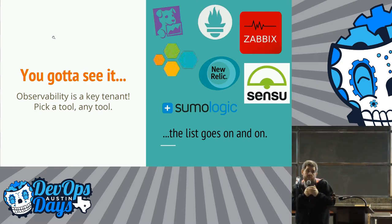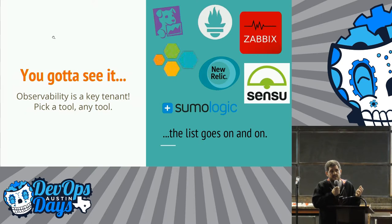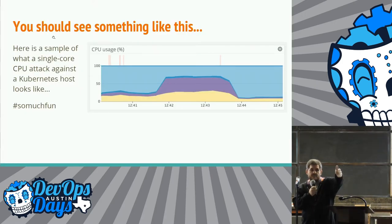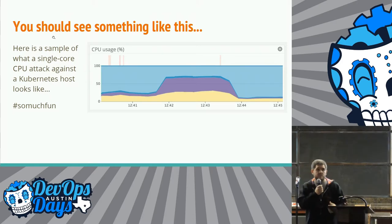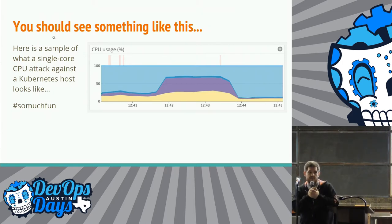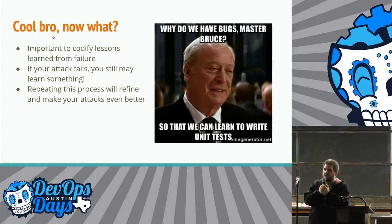The second thing is you've got to be able to see what's happening — observability is a key tenet. You can pick any tool; here are just some. Sumo Logic is up there, they're here — vendor shoutout. These are tools we all know and use. For example, I simulated an attack on a single core on a Kubernetes host. In Datadog it shows that one of my cores' CPU usage is above 50%. How did that affect my front end?